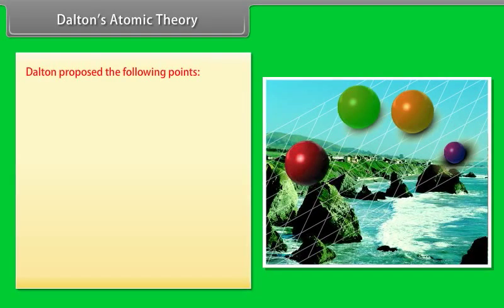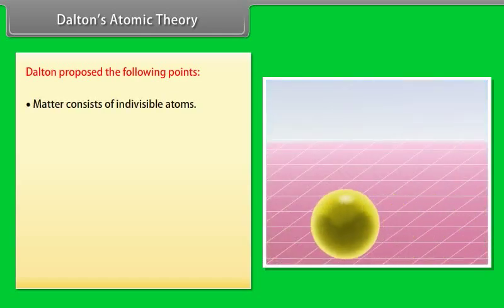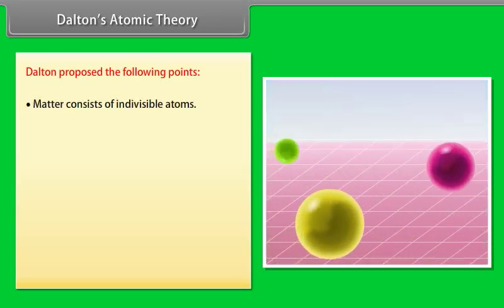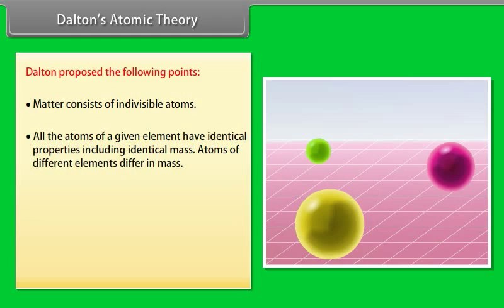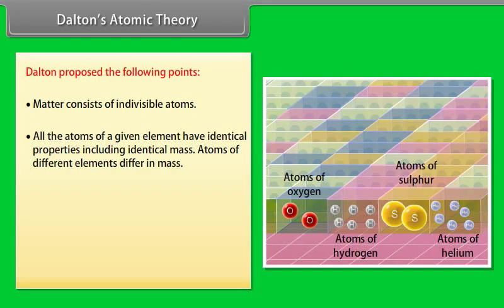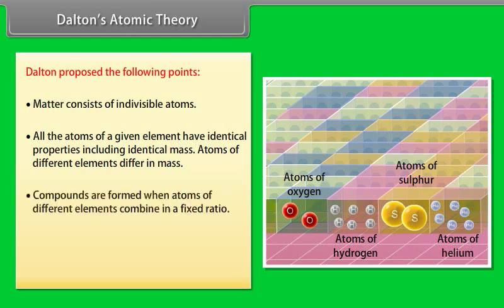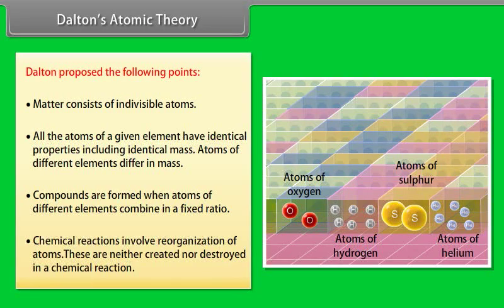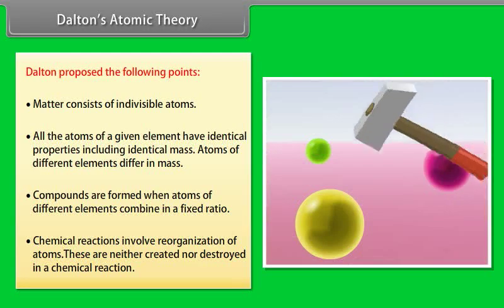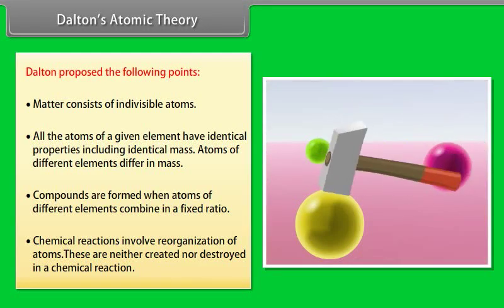Dalton's Atomic Theory. Dalton proposed the following points: 1. Matter consists of indivisible atoms. 2. All atoms of a given element have identical properties including identical mass. 3. Atoms of different elements differ in mass. 4. Compounds are formed when atoms of different elements combine in a fixed ratio. 5. Chemical reactions involve reorganization of atoms — these are neither created nor destroyed in a chemical reaction.